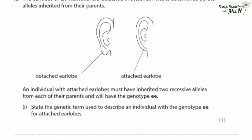The earlobes of an individual are detached or attached, determined by alleles inherited from their parents. An individual with attached earlobes must have inherited two recessive alleles from each of their parents and will have the genotype ee. State the genetic term used to describe an individual with the genotype ee for attached earlobes — as both alleles are recessive, this is described as homozygous recessive.